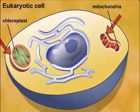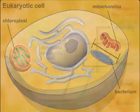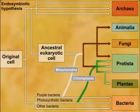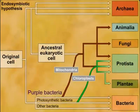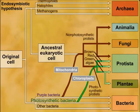Third, mitochondria are about the same size as bacteria. Fourth, mitochondria appear to have been derived from purple bacteria and chloroplasts derived from photosynthetic bacteria.